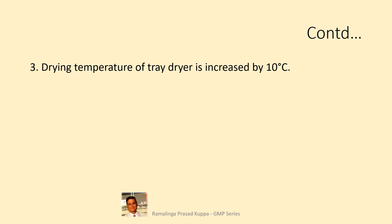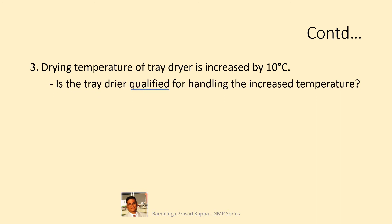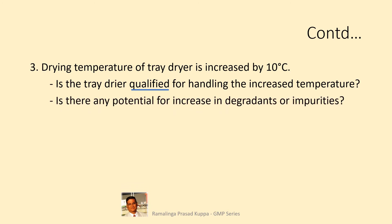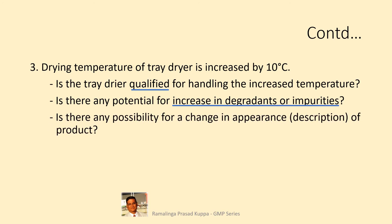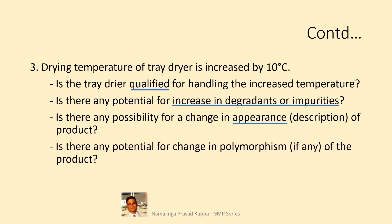In this change, the drying temperature of the tray dryer is increased by 10 degrees Celsius. Is the tray dryer qualified for handling the increased temperature? Is there any potential for increase in degradants or impurities? Is there any possibility for a change in appearance — that is the description test — of the product? A similar approach as described above should be taken here too, because due to the increase in temperature these attributes may change. Is there any potential for change in polymorphism, if any, of the product? Products with polymorphism may change into another form when exposed to higher temperatures.